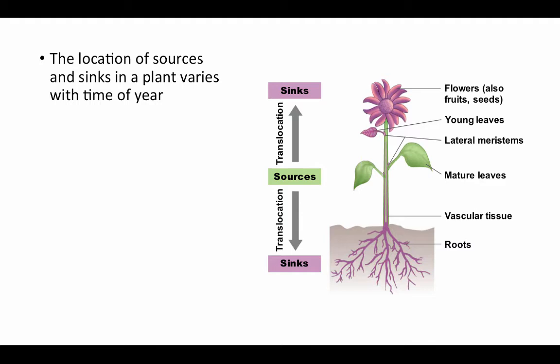The location of sources and sinks in a plant can vary depending on the time of year and what stage in a life cycle the plant is at. Sources are the leaves; sinks might be developing flowers or fruits, seeds, young leaves that are actively growing, roots, or other underground carbohydrate storage such as tubers.